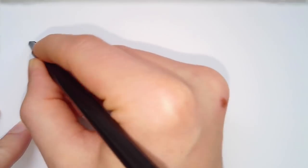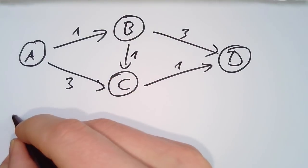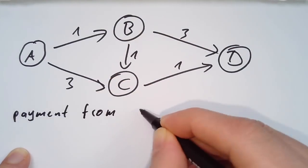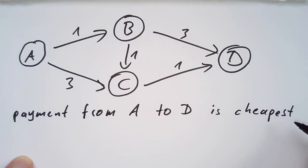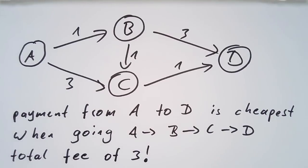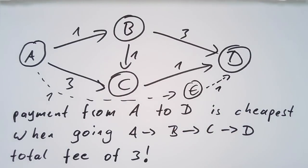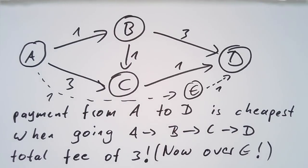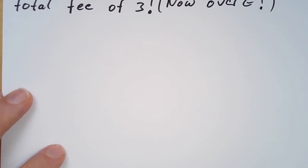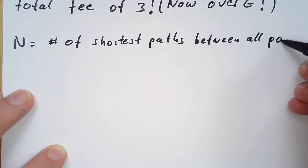I will use the document camera that the community sponsored to me — thank you very much for all your support. Let's assume we have a Lightning Network with four nodes A, B, C, and D with the following edges between them. When A makes a payment to D, we can see what the shortest path would be, which is going from A over B to C to D with a total fee of three. Now let us assume we have another node E with a fee rate of one satoshi — now the cheapest path is over E. In order to earn the expected amount of fees, we have to compute big N, which is the number of shortest paths between all pairs of nodes.